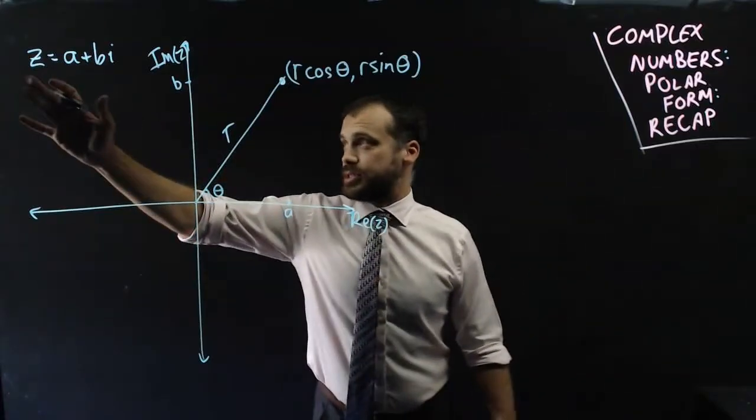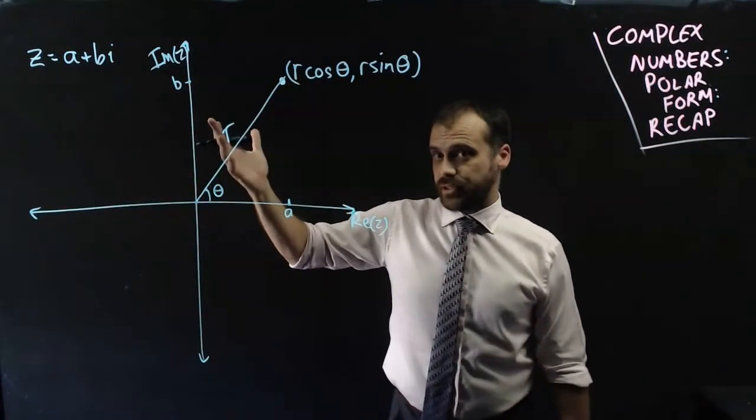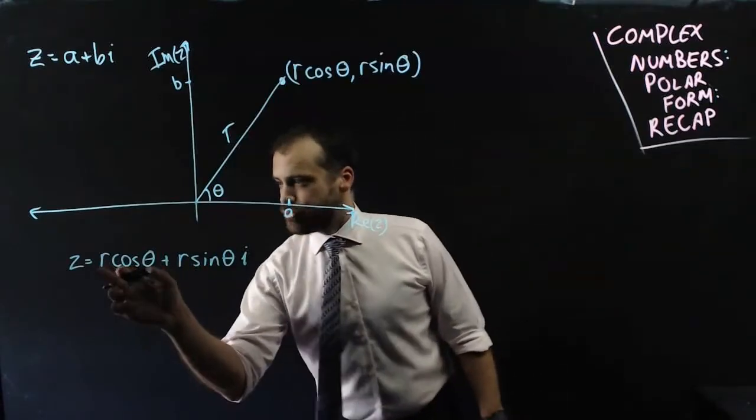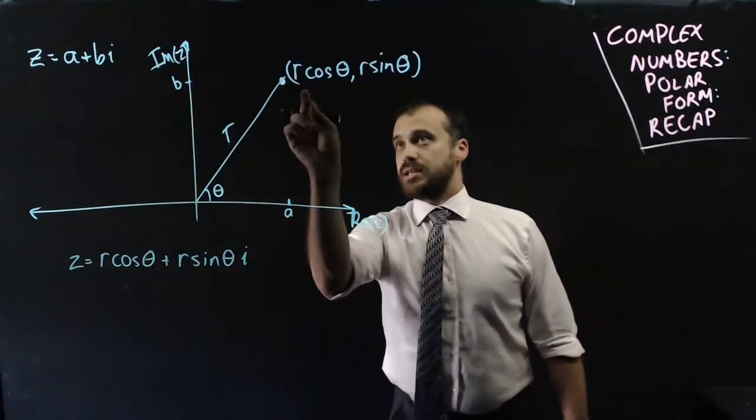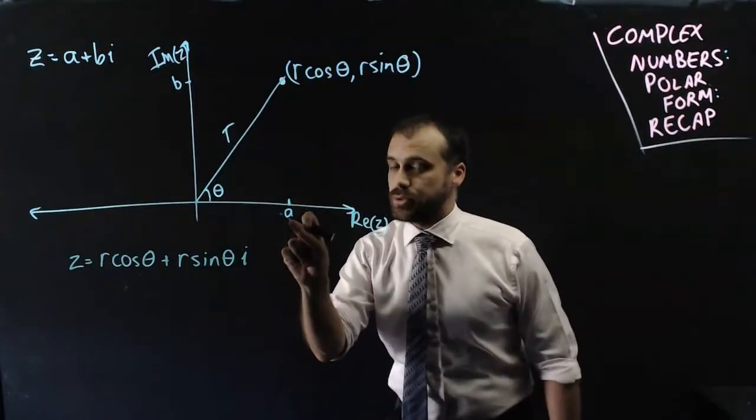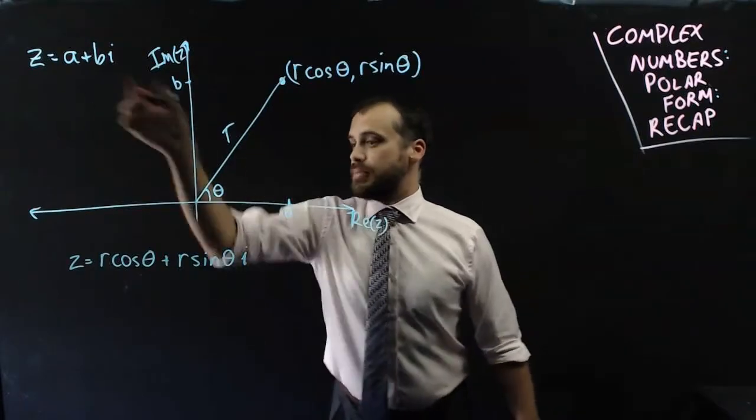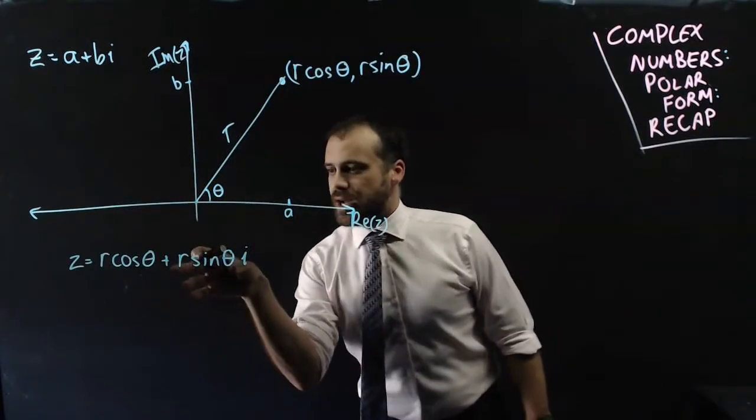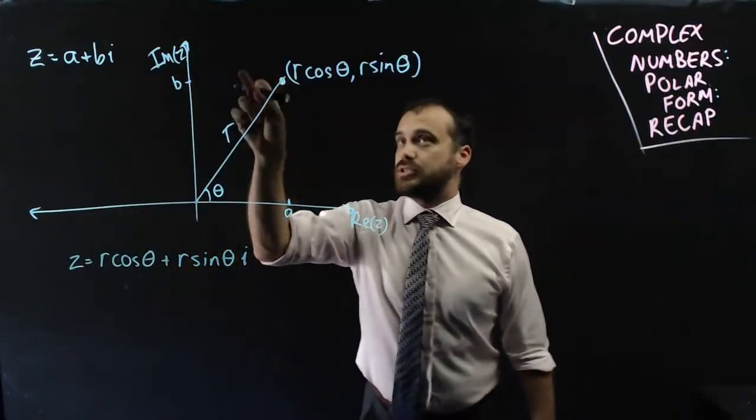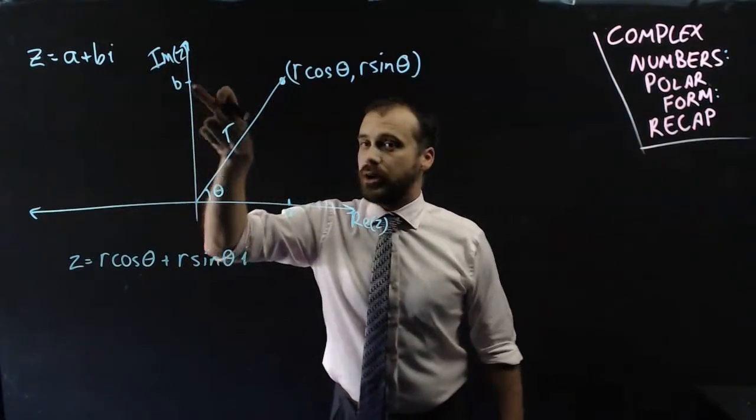That means that we can express Z a little bit differently. Down here, we can see that the real component can be expressed as r cos theta. r cos theta is equal to our real component. And the imaginary component can be expressed as r sine theta. r sine theta is our imaginary component.